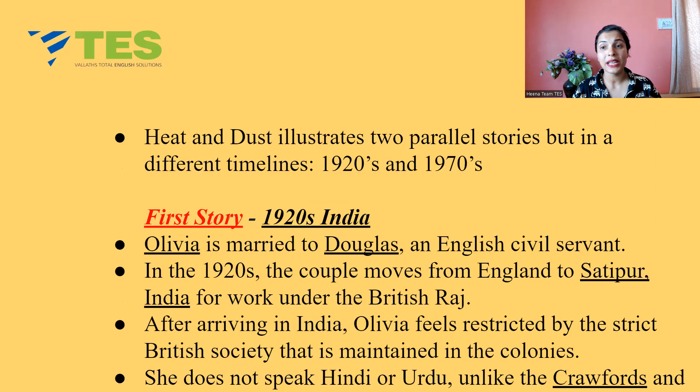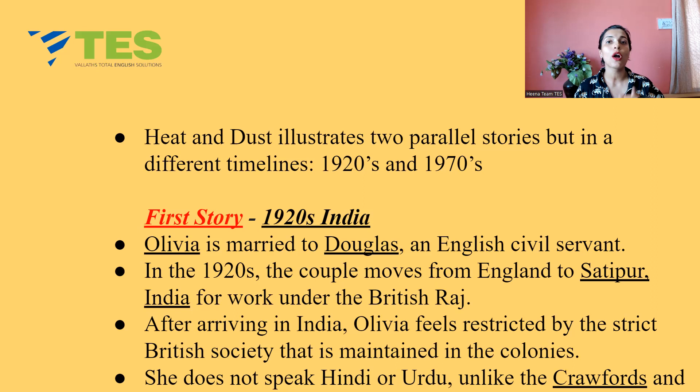Heat and Dust illustrates two parallel stories but in different timelines — the 1920s and the 1970s. When you read the novel, these stories go together simultaneously. But for clarity, I will first talk about the story of the 1920s, and when I finish it, I will start with the second one of the 1970s. So let's start with the first story of 1920s India.